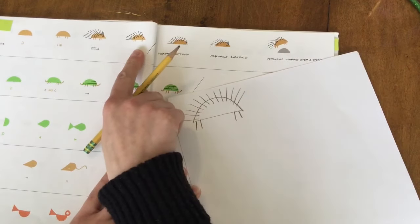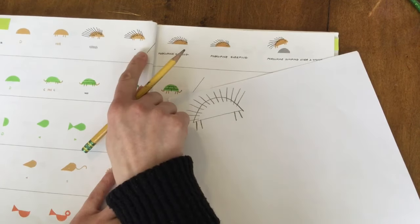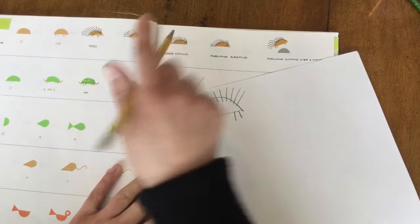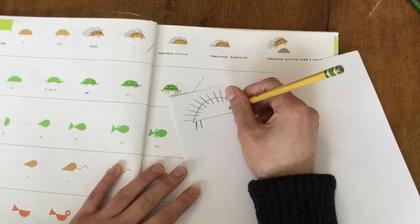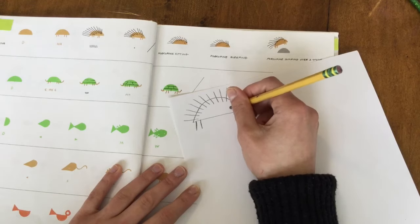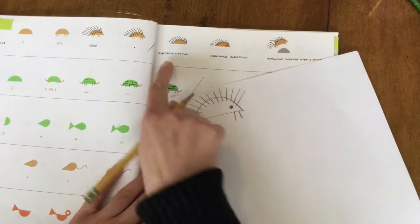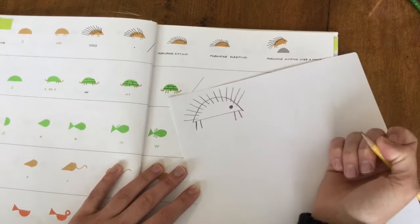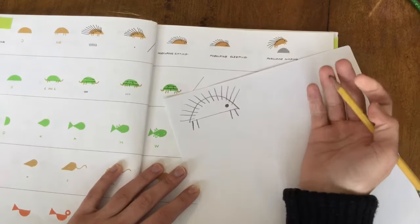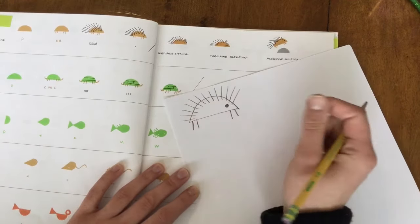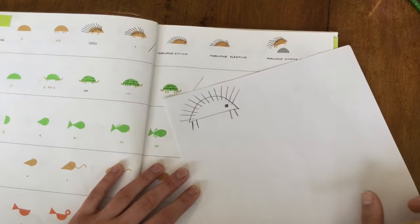Then we draw a dot for the eyes. There we go. And these are just different details you can add depending on what you want your porcupine to do. So again, very simple shapes. There's a porcupine. You might color it in to make it look more exciting. That is up to you.